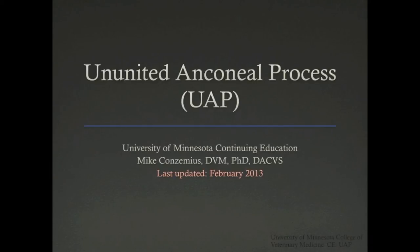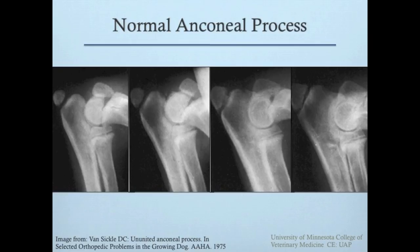An ununited anconeal process can cause elbow pain, lameness, and arthritis. It can occur in some breeds of dogs when the anconeal process is a separate center of ossification and it does not fuse to the ulnar metaphysis. The normal anconeal process is a slightly hooked piece of bone that forms the proximal aspect of the ulnar trochlea.